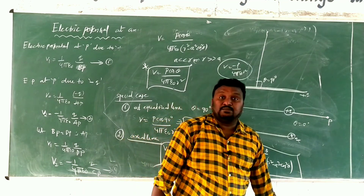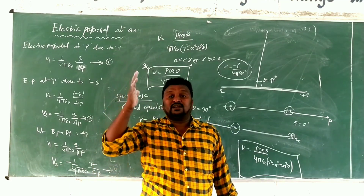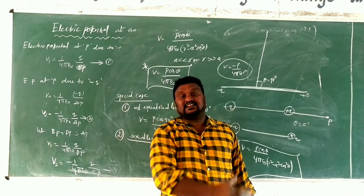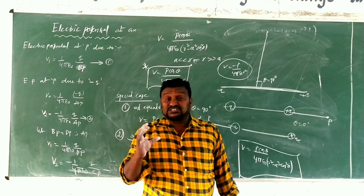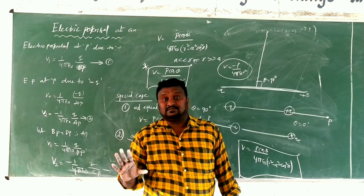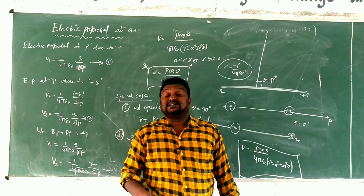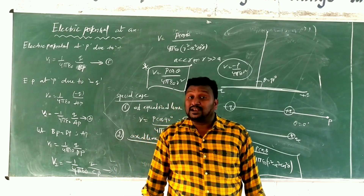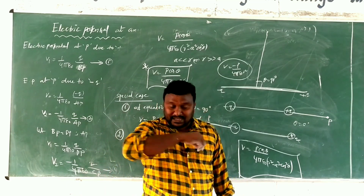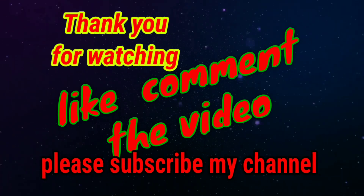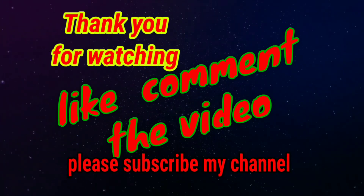So children, this is about the electric potential due to a dipole at any point, at a point on the equatorial line, and at a point on the axial line. I hope you understand. If you found this video helpful, please like, share, comment, and subscribe to my channel for latest notifications. Press the bell icon. We will meet in the next video with the next interesting topic. Bye, take care.